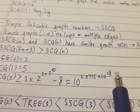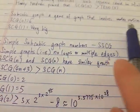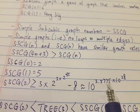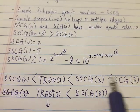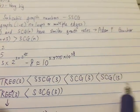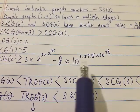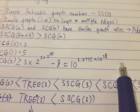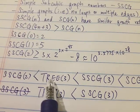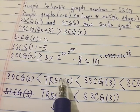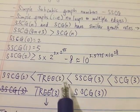So SSCG(2) is around 10 to the 10 to the 28 — a very big number, bigger than a googol. But compared to TREE(3), it's still relatively small. SSCG(2) is also smaller than Graham's number or Googolplex. But if we put 3 into SSCG, it immediately becomes bigger than TREE(3) — it jumps from there to something beyond TREE(3). It's a very, very fast-growing function.